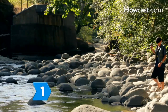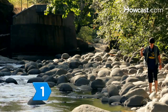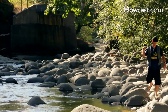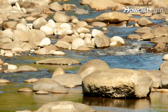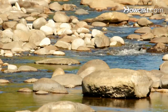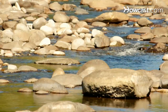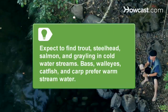Step 1. Look for shallow, fast-moving water that runs over rocks and boulders. Known as rapids or riffles, these are prime locations for game fish. Expect to find trout, steelhead, salmon, and grayling in cold-water streams. Bass, walleye, catfish, and carp prefer warm stream water.